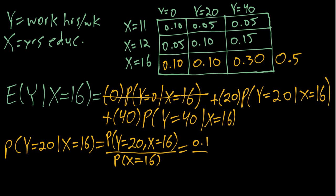So that will be our denominator, and if we simplify that we'll get 0.2. So 0.2 says if we are only looking at the X equals 16 group, 20 percent of those individuals work 20 hours per week, or one in five.